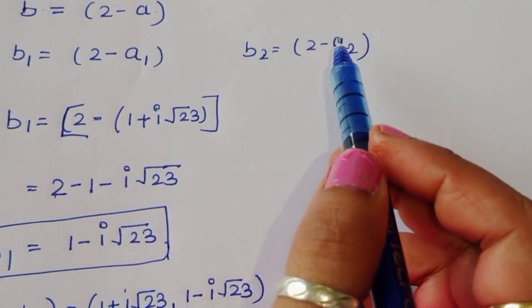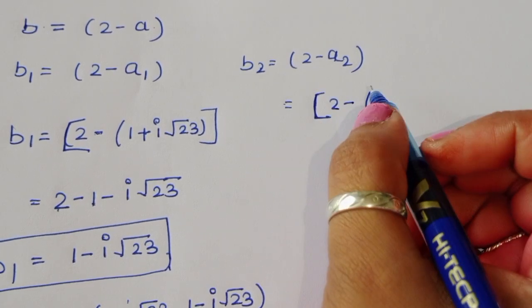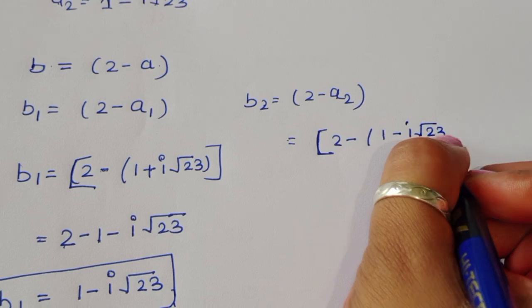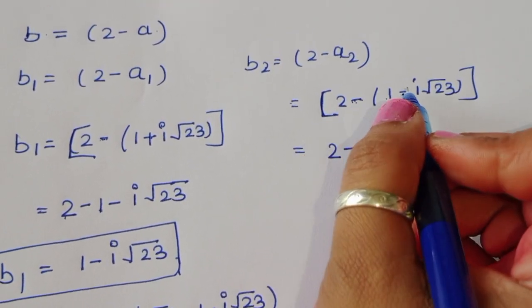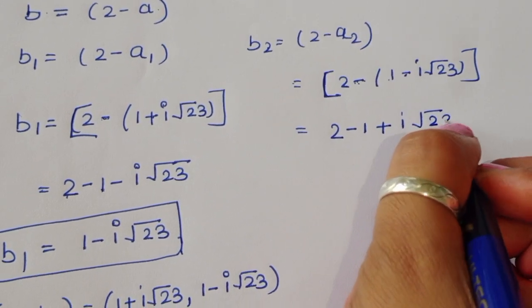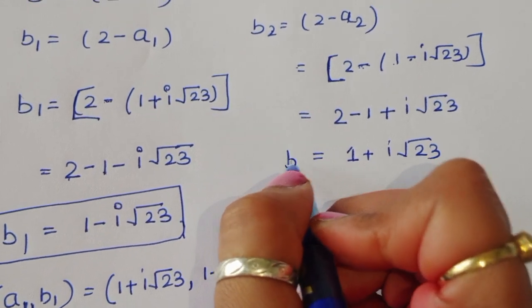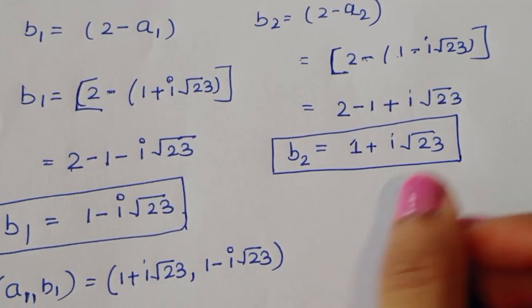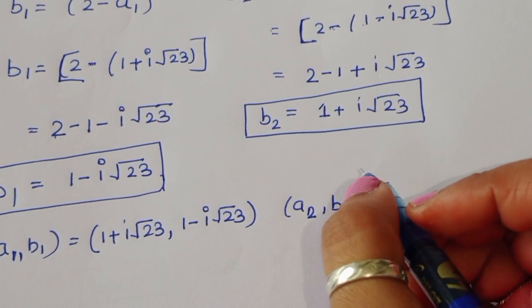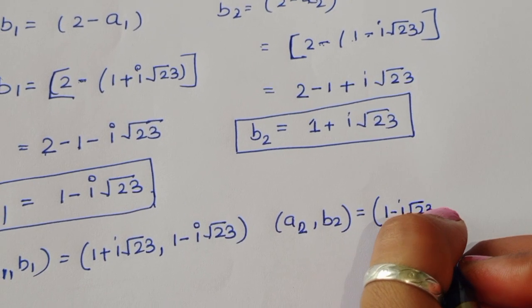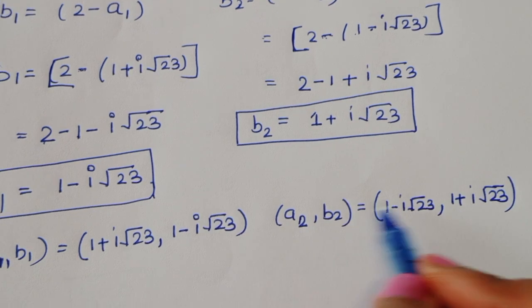For b2: b2 equals 2 minus a2, so 2 minus (1 minus i root 23). Opening the bracket: 2 minus 1 plus i root 23, which equals 1 plus i root 23. So a2 is 1 minus i root 23 and b2 is 1 plus i root 23.